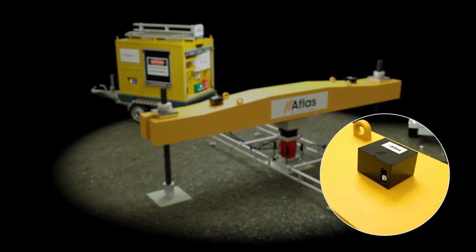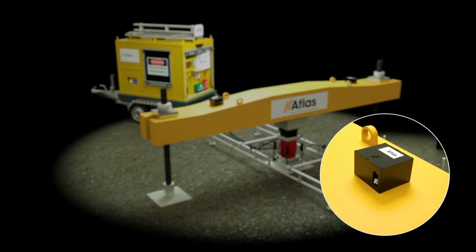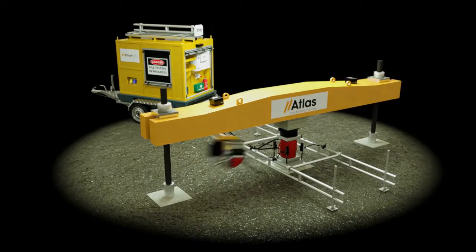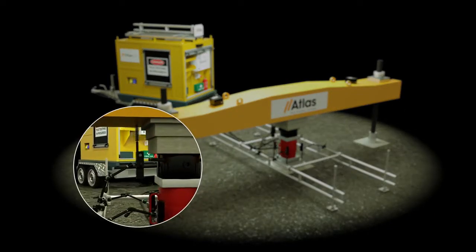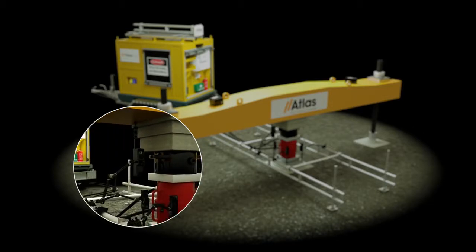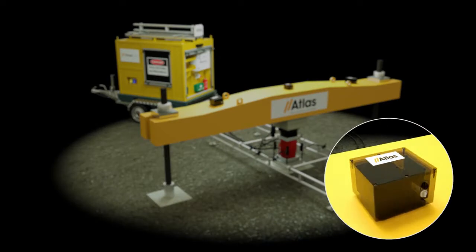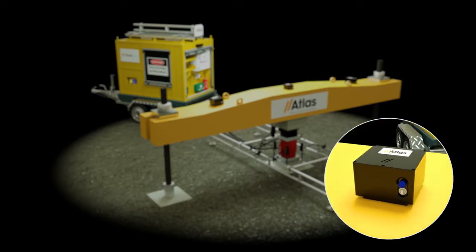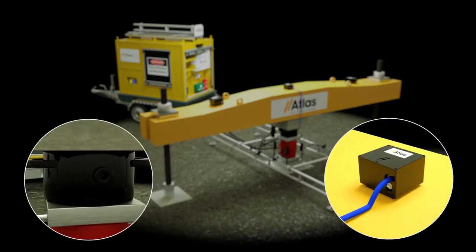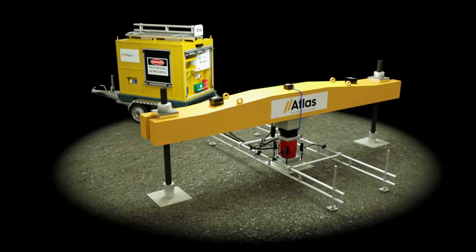Wireless rotation sensors attach magnetically to record the performance of the reaction frame or Kentledge whilst a wireless sensor records any uplift. The wireless load cell sensor records direct load to the pile and transmits data eight times every second.